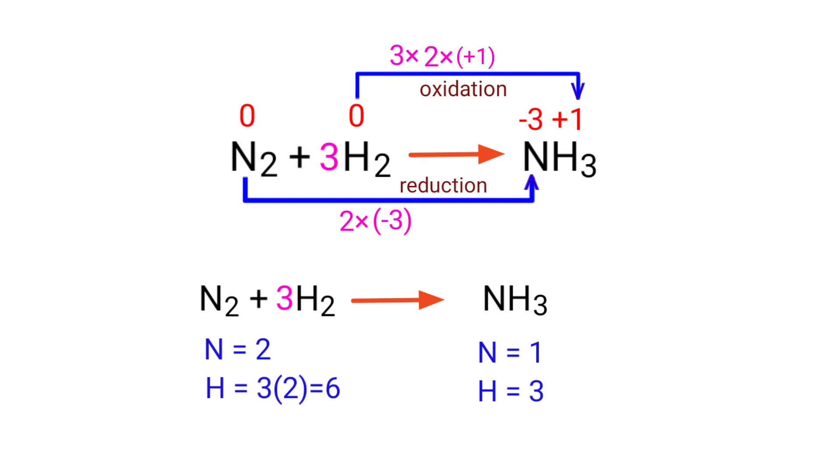To balance the chemical equation, we need to make use of coefficients. A coefficient is a number that we place in front of a chemical formula. In this equation, we need to balance the nitrogen and hydrogen atoms. To do this, put a coefficient of 2 in front of NH3.